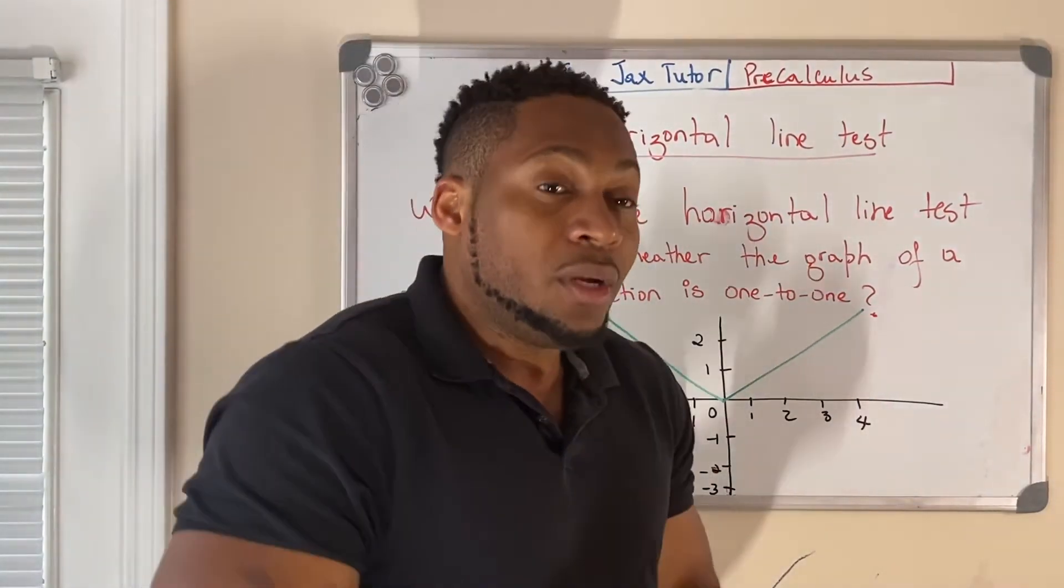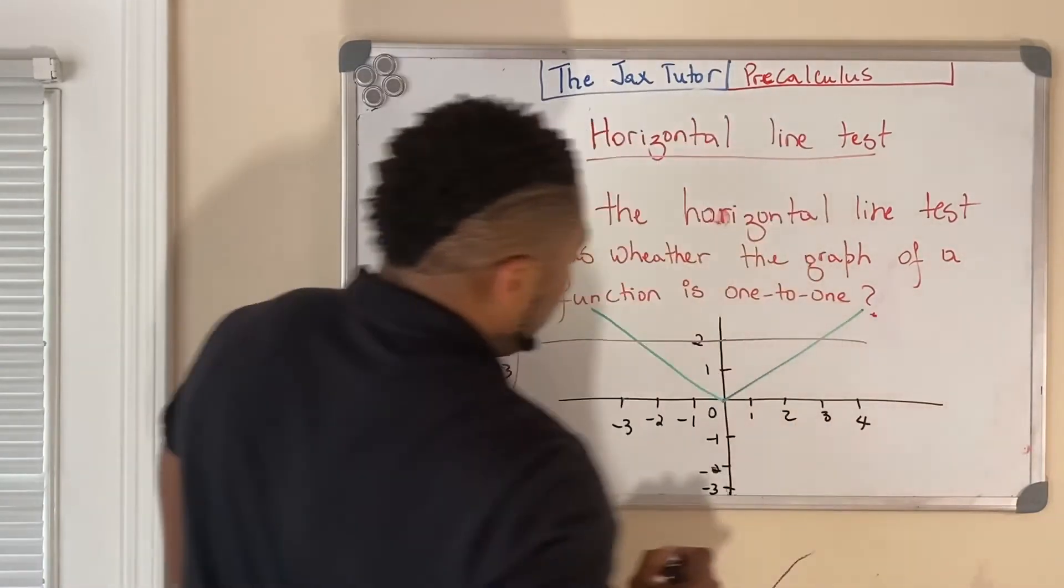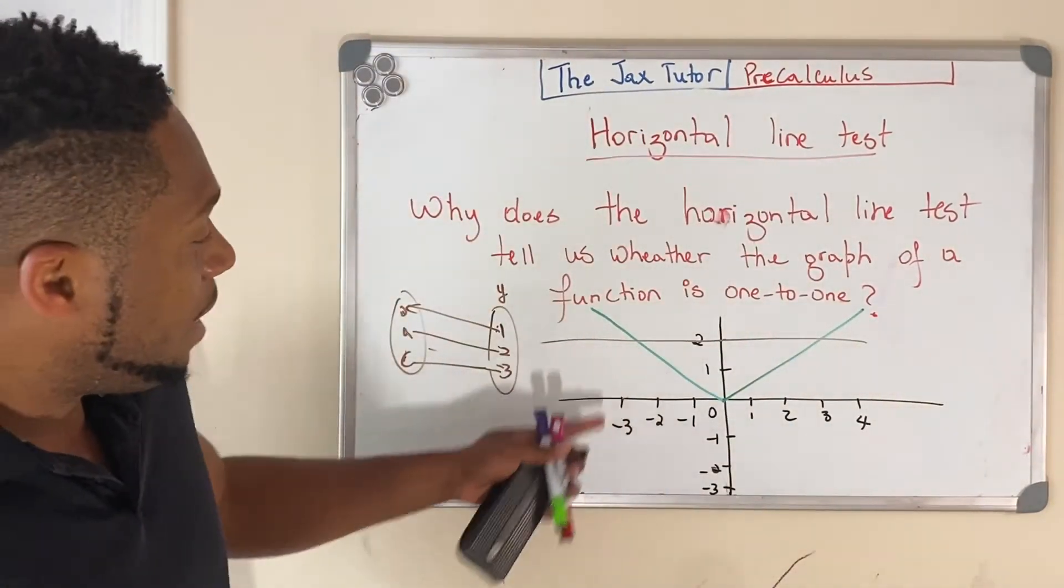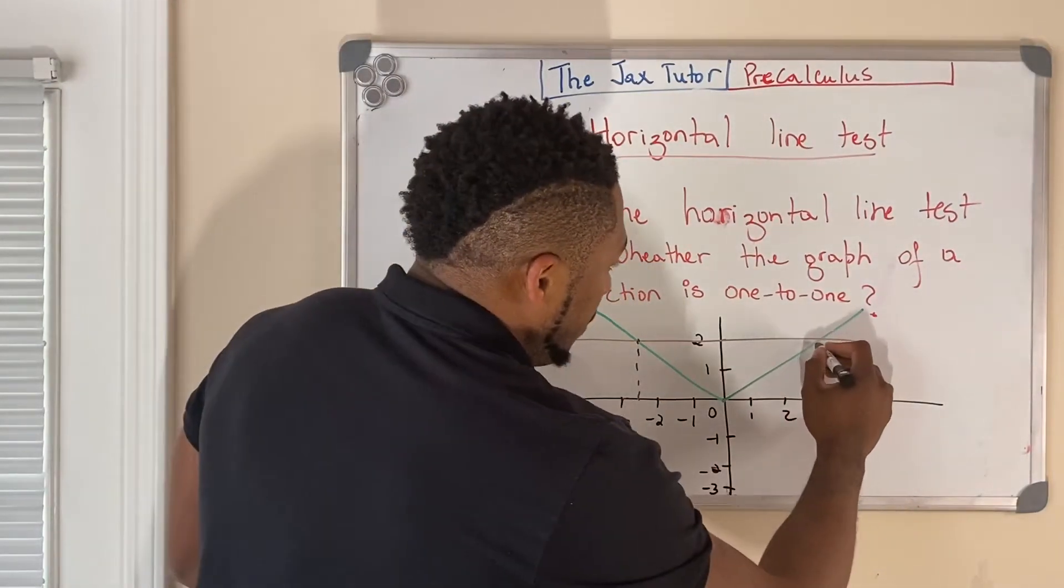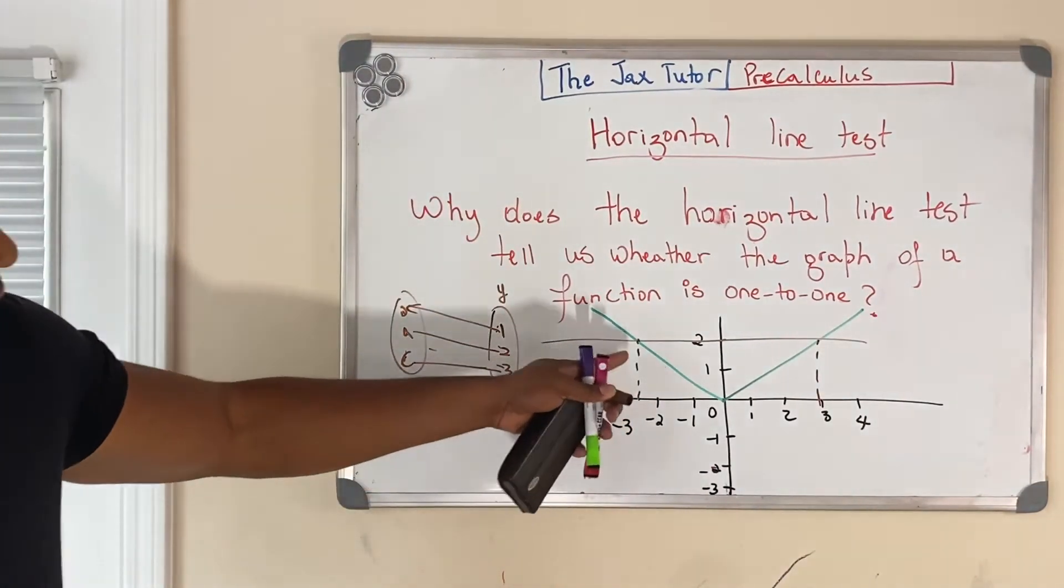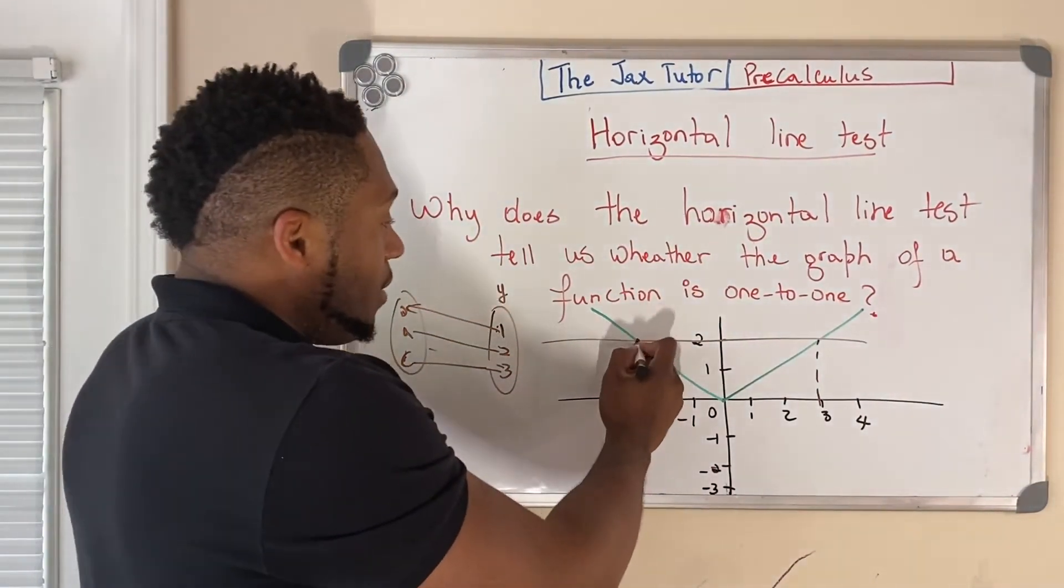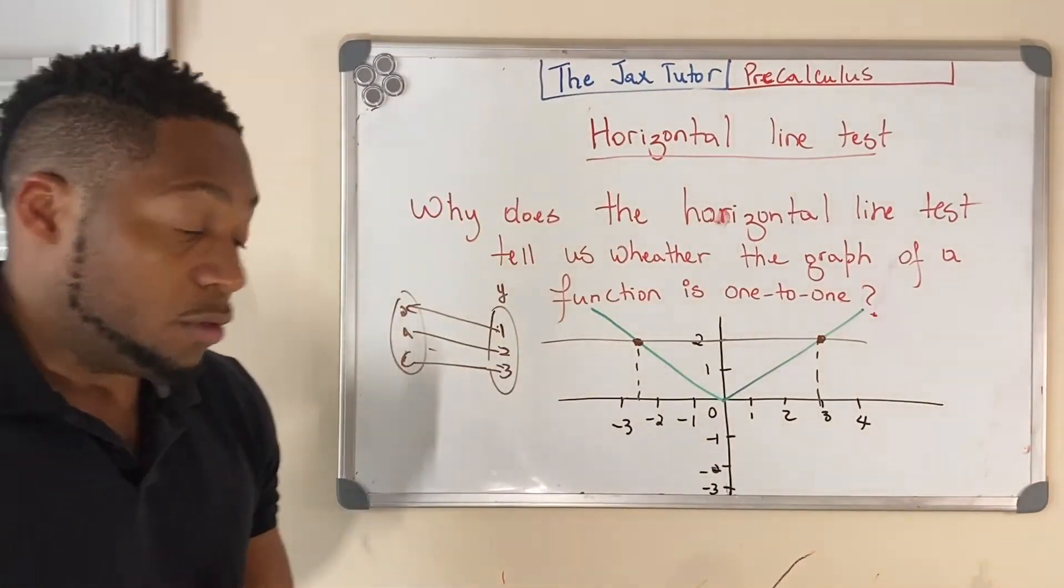So, now, let's draw a horizontal line in here. So, for this horizontal line, we see here that this intersects this function at two different values. Intersects it at this value here and also at this value here. So, that means this function is not one-to-one.